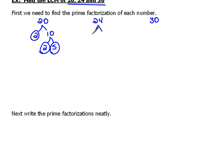24 I could write as 2 times 12, and 12 would be 2 times 6, and 6 would be 2 times 3. Now those are all prime numbers.